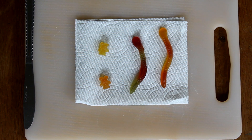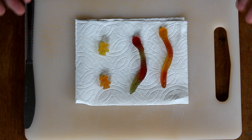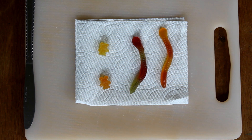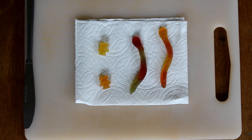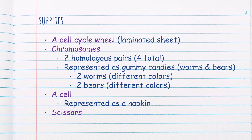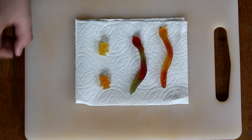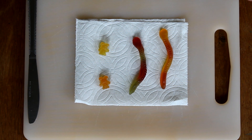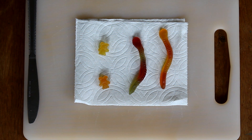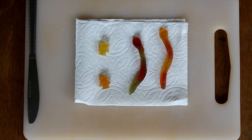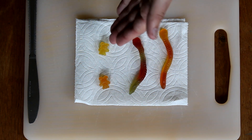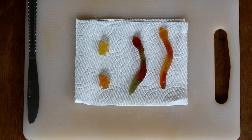Today we're going to be going over the cell cycle and mitosis. With this demonstration we'll be going through the entirety of the cell cycle as well as demonstrating the process known as mitosis — not to be confused with meiosis, which we learned about earlier. We'll be using gummies again, a butter knife, and a cutting board. Make sure you get supervision when cutting, but you don't need gummies — you could use pens or pencils. The only requirement is that you have two of each thing.